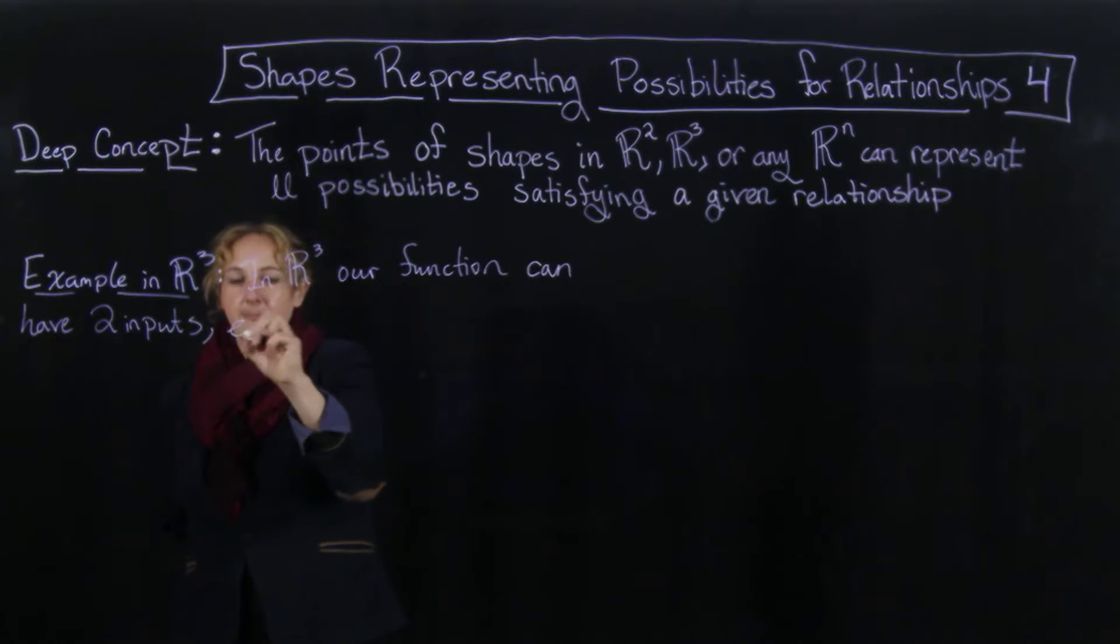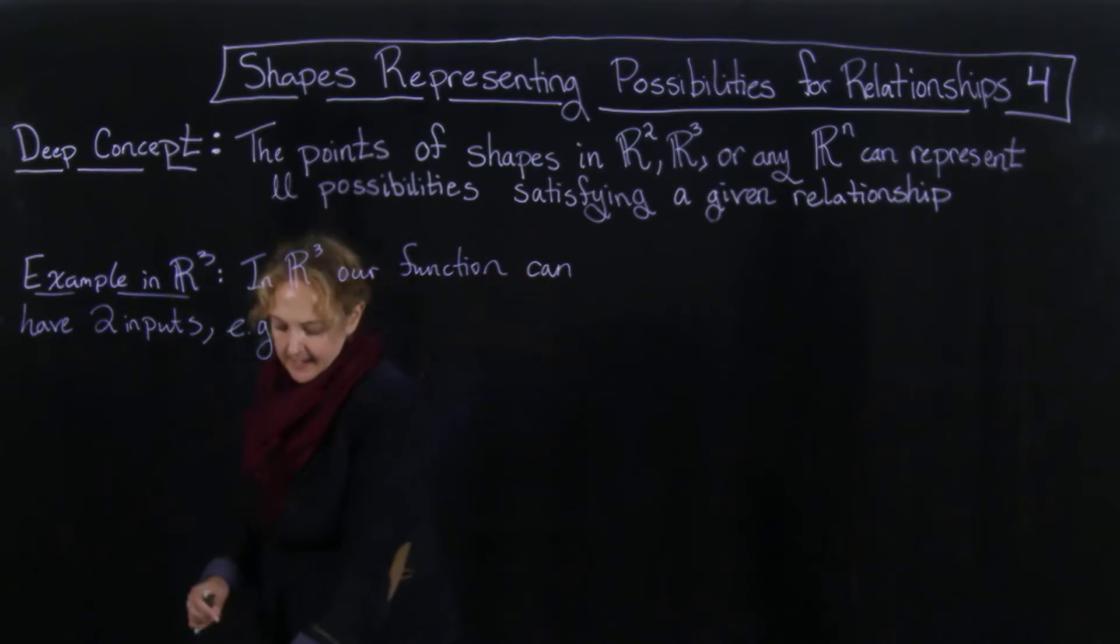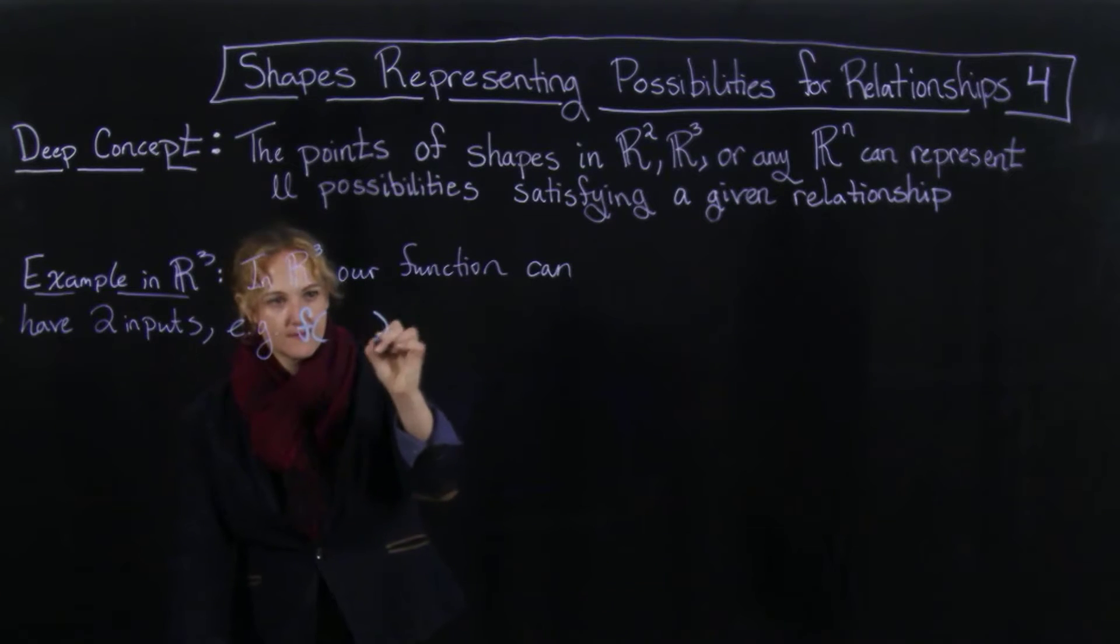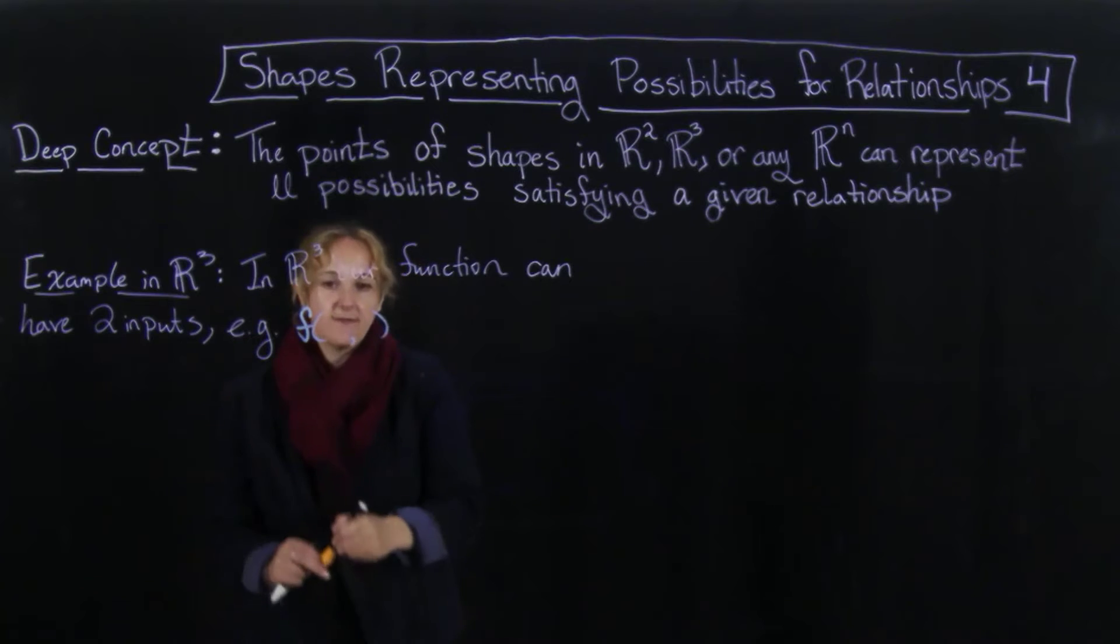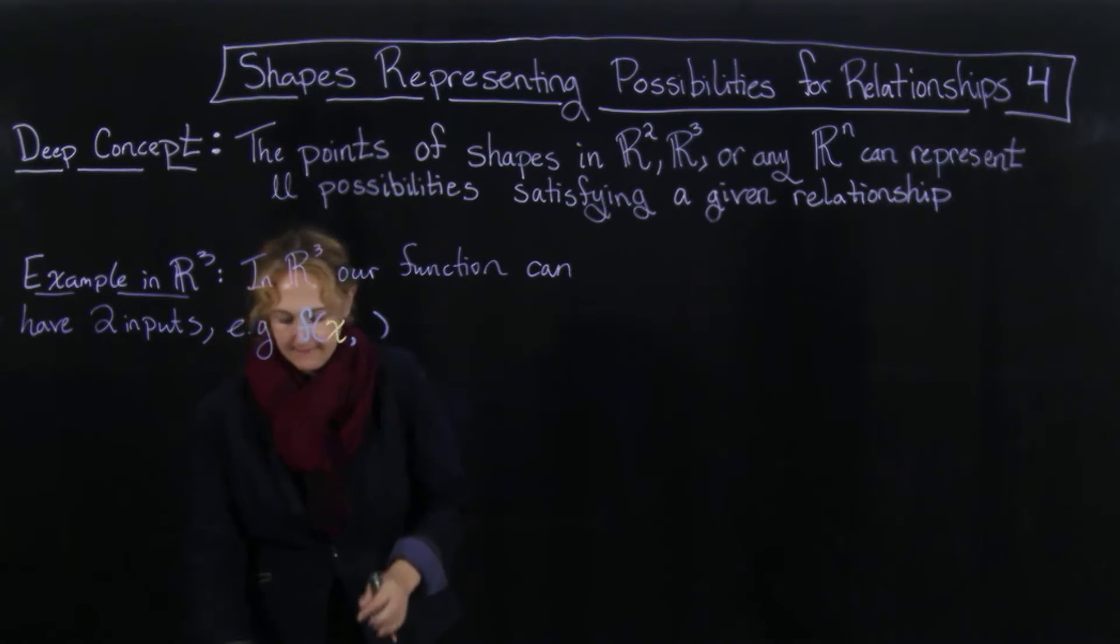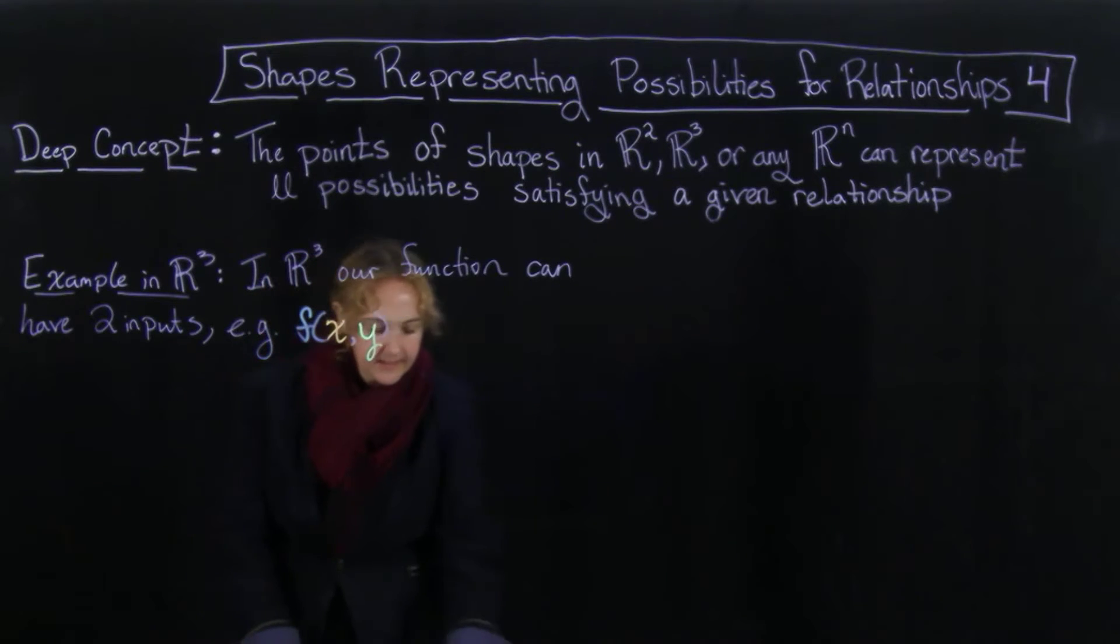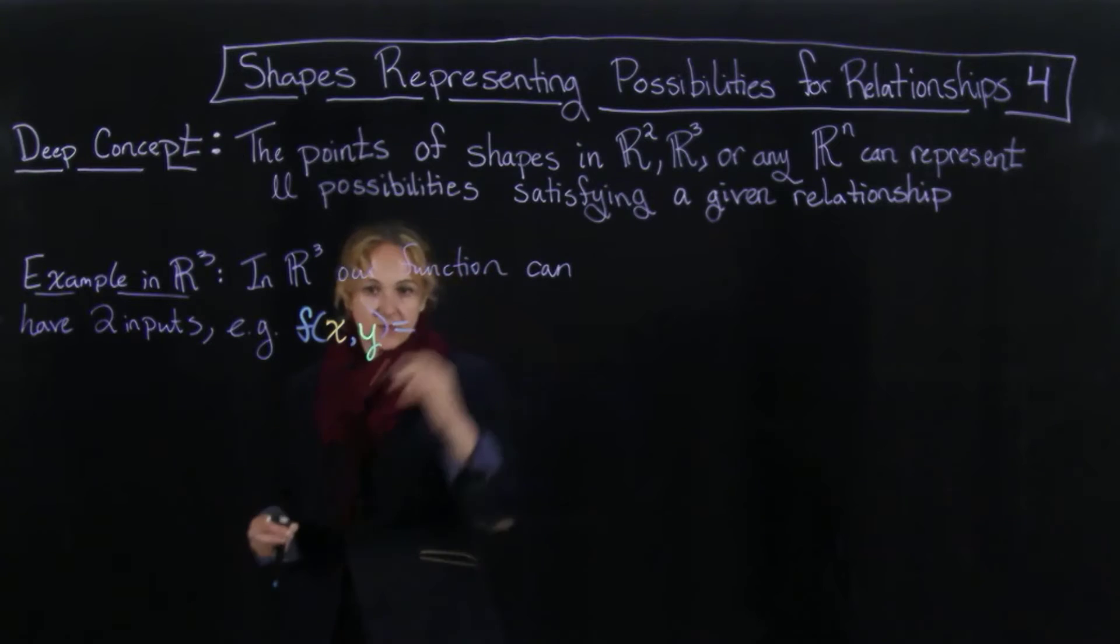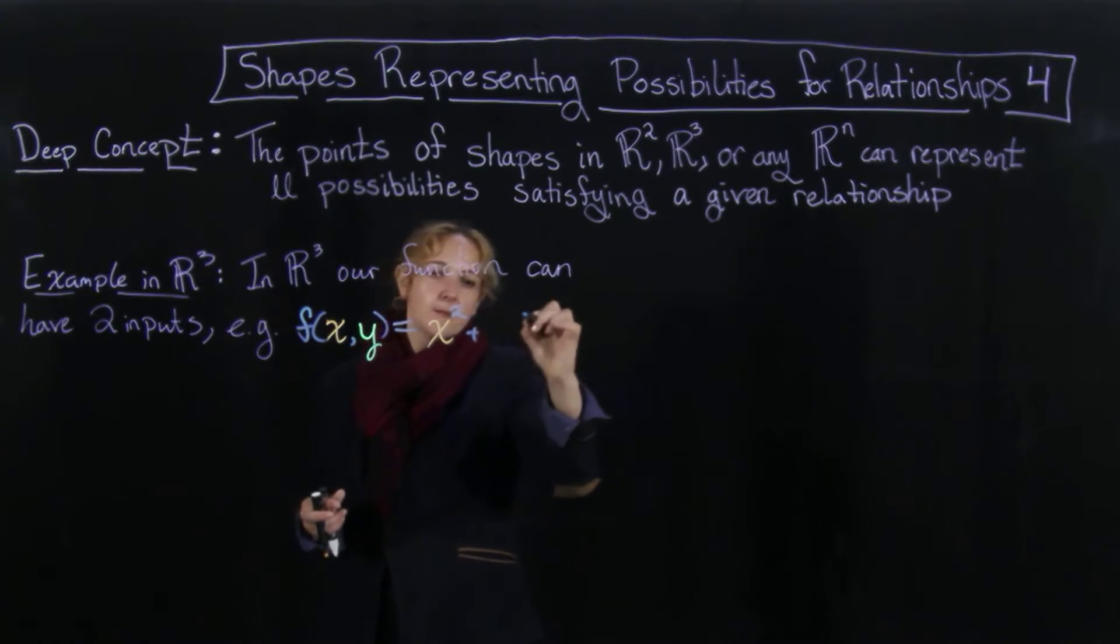For example, we could look at a circumstance where we have f of xy. Now you have two inputs here, an input x and an input y. So f of xy is going to equal x squared plus y squared.